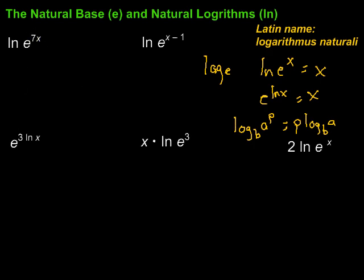So for this first one, I have ln of e to the 7x. Well if I remember natural logarithms and that power, I could pull that power out front, and I would have 7x times the natural log of e. I'm writing out more steps than I need here, but just to be very clear. Remember that the natural log is log base e of e, which means e to what power gives me e? That would be e to the first power, so this is just 1, and 1 times 7x gives me 7x. So we see how those two things undo each other, and I'm left with just 7x.